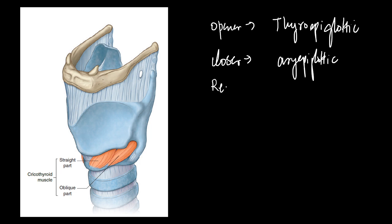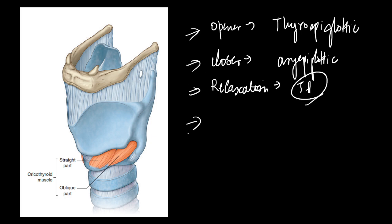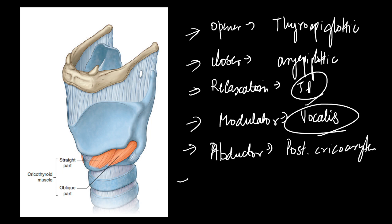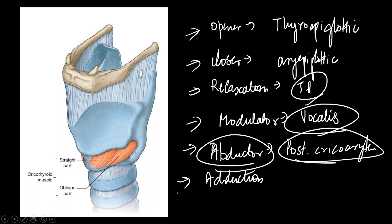The relaxer or relaxation of vocal cords is by the thyroarytenoid muscle. The modulator — a muscle that can both relax and cause tension of the vocal cords — is the vocalis muscle. The abductor of vocal cords is the posterior cricoarytenoid muscle. All the remaining muscles cause adduction of the vocal cords. The posterior cricoarytenoid muscle is also known as the safety muscle of the larynx.